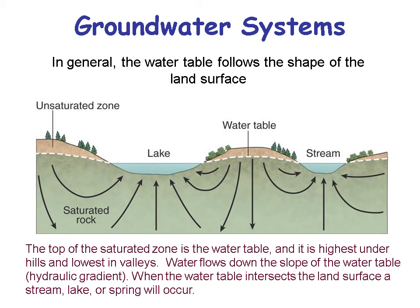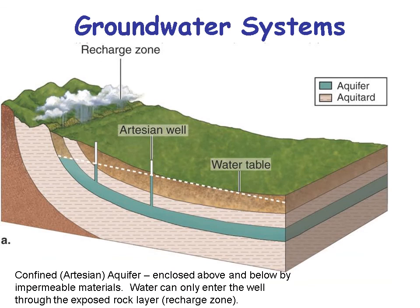The term for the slope of the water table is hydraulic gradient. Hydraulic means water or liquid, and gradient means how steep it is. A lot of these terms make sense — we're just using them for groundwater.